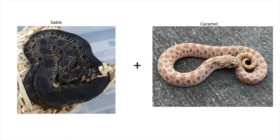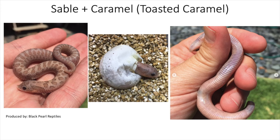The next combination is sable with the caramel gene. Caramel is a T-plus albino, very similar to toffee, and one of the key characteristics is the reduced head stamp. When you combine sable and caramel you get what's called a toasted caramel — a really cool, unique-looking snake. From my research, not much has been done with this combination. I couldn't find any toasted caramel condas, super condas, or arctic versions, so this is a combination a lot of people can start working with because it hasn't really been focused on in this community.